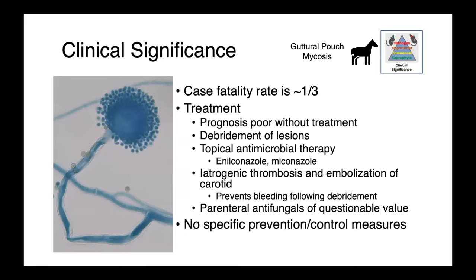The case fatality rate for guttural pouch mycosis is quite high — approximately a third — and the prognosis is very poor without treatment. These infections are managed by first debriding the lesions, physically removing as much abnormal tissue and fungal growth as possible, followed by topical antifungal therapy, most commonly enilconazole or miconazole. Because Aspergillus likes to invade vascular structures, iatrogenic thrombosis and embolization of the carotid artery can be important — it can prevent bleeding following debridement and also deprive the fungal colony of nutrients. Systemic antifungals are of questionable value, so for guttural pouch mycosis, local treatment is the priority.